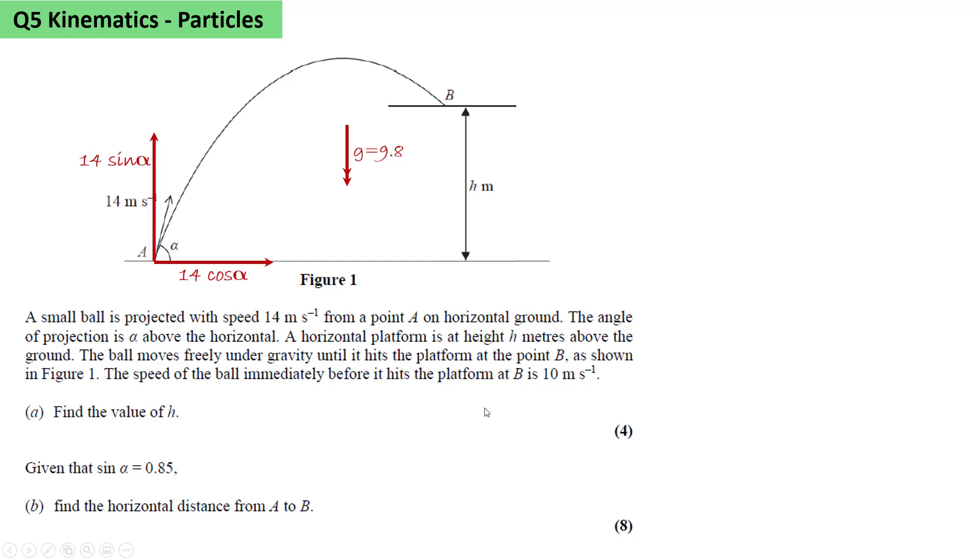We will always split the motion in a projectiles problem into the horizontal part and the vertical part. So we split the initial velocity into a 14 cos alpha horizontal component and a 14 sin alpha vertical component. At the point B, the horizontal velocity will remain the same at 14 cos alpha.